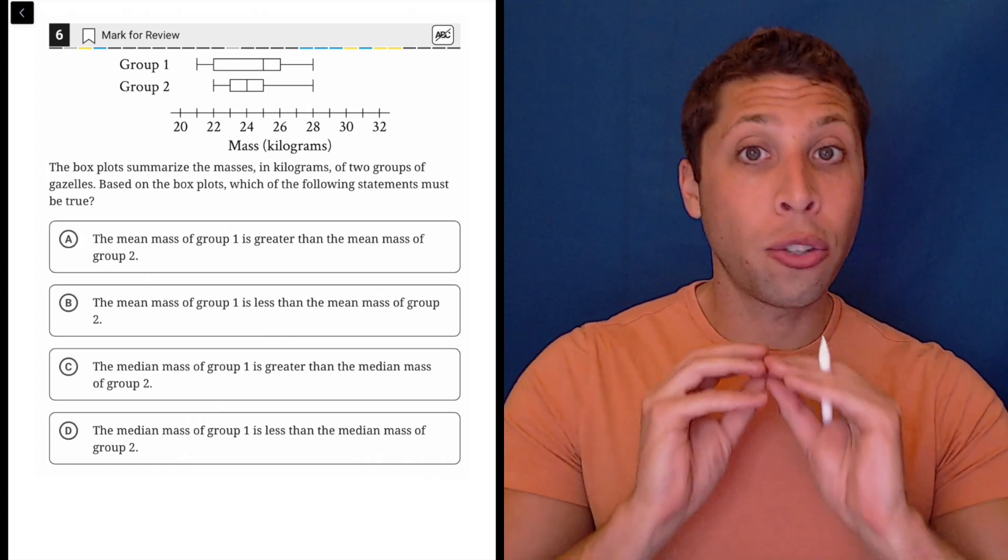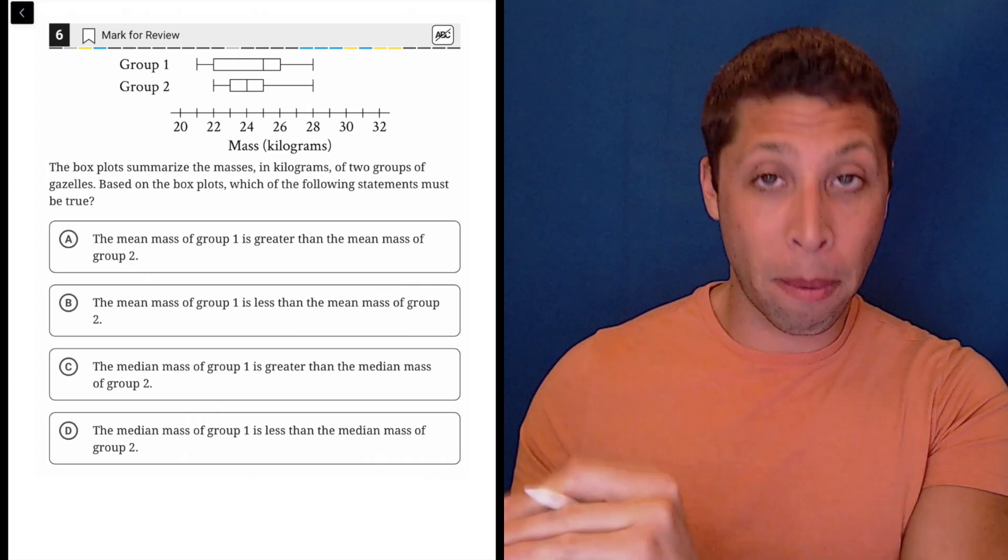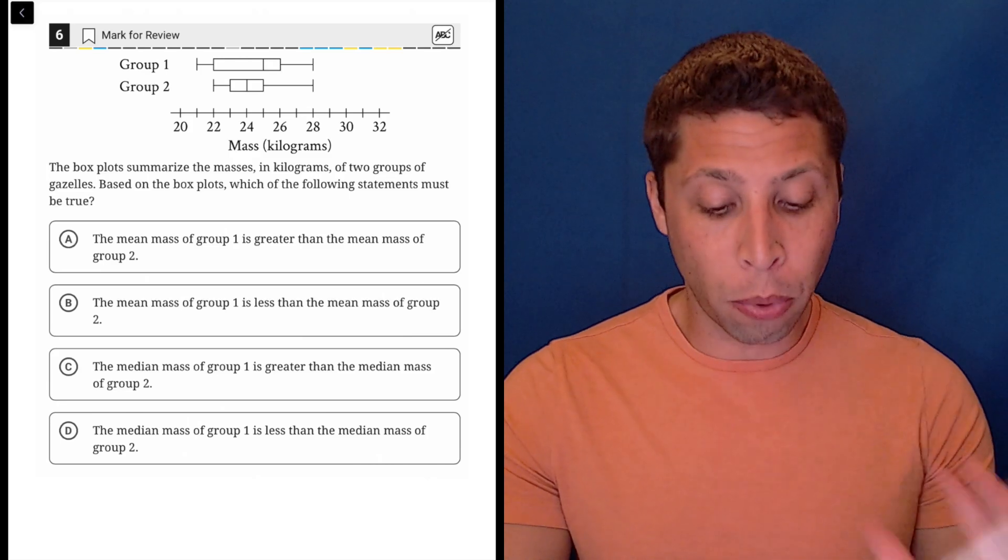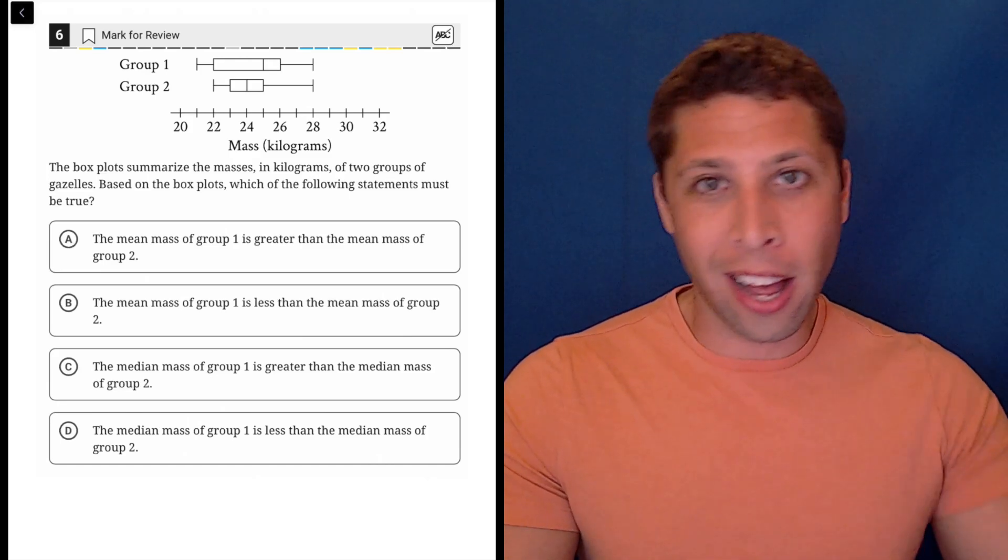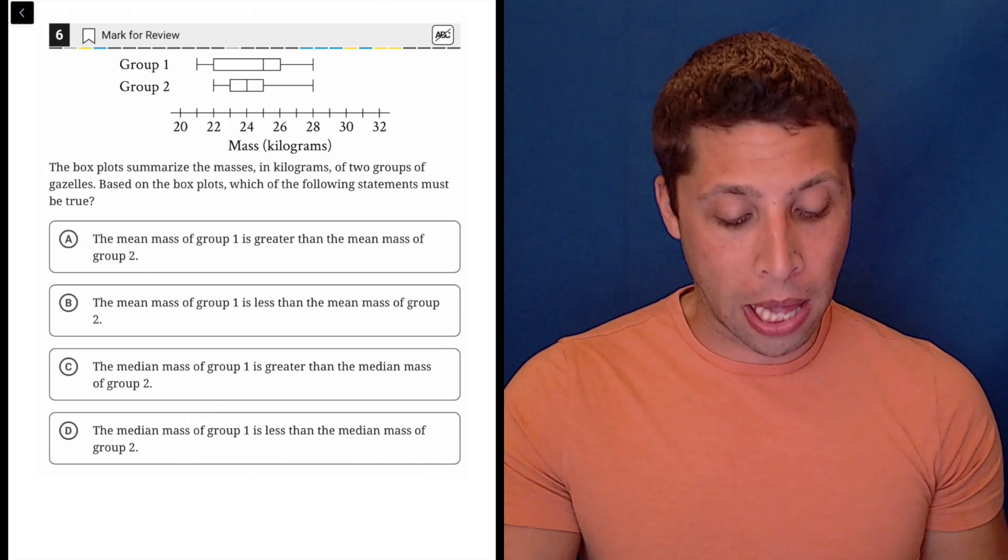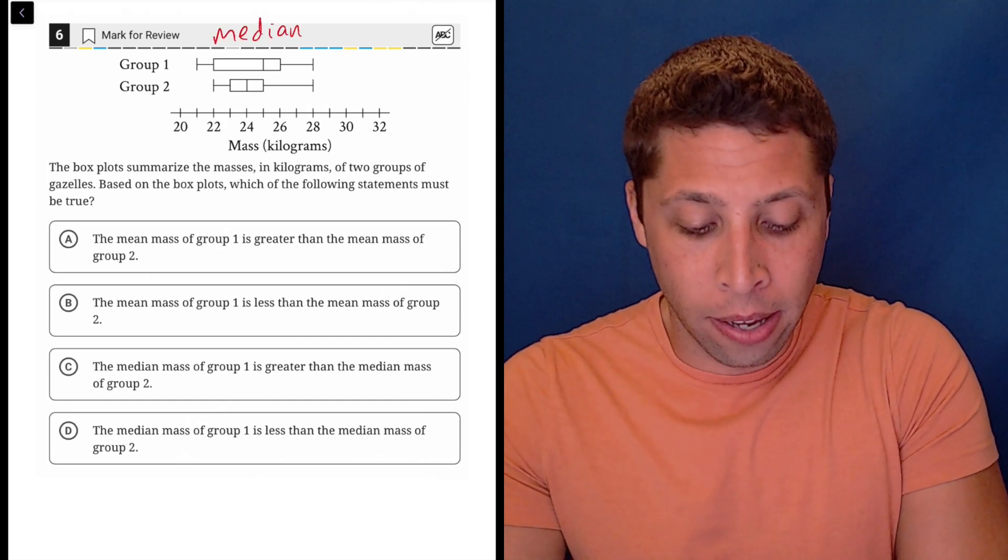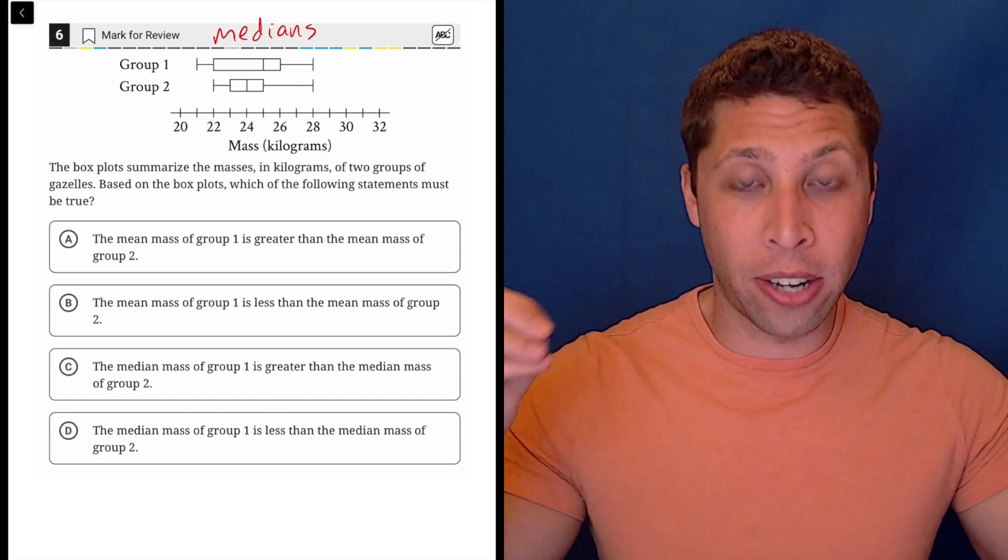Well, here's just one thing to remember with box plots that at least gives you a 50-50 shot here. The most important thing is that all of the lines we really see with box plots have to do with medians.